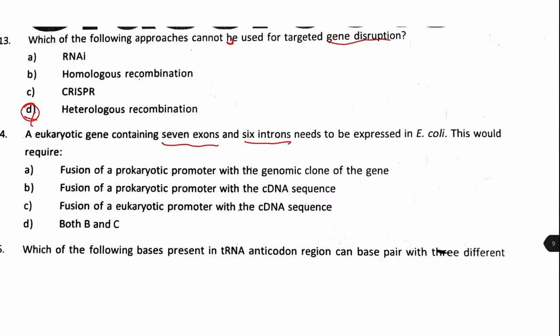Next question: a eukaryotic gene with seven exons and six introns needs to be expressed in E. coli. This would require fusion of a prokaryotic promoter with a cDNA sequence — because E. coli is a prokaryote, it needs a prokaryotic promoter, and cDNA is used to avoid introns that prokaryotes cannot splice. A genomic clone with a prokaryotic promoter would not work due to the introns. Answer: option B.